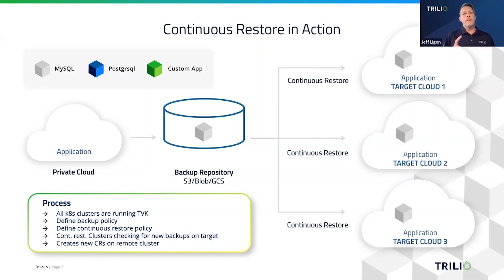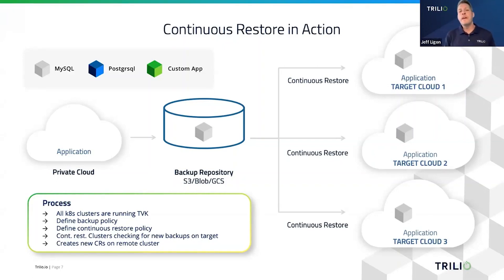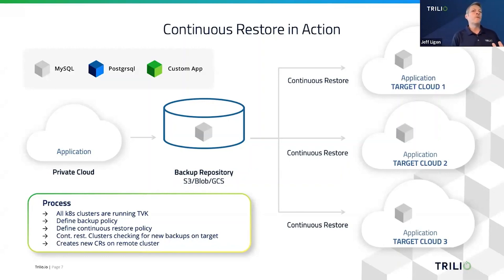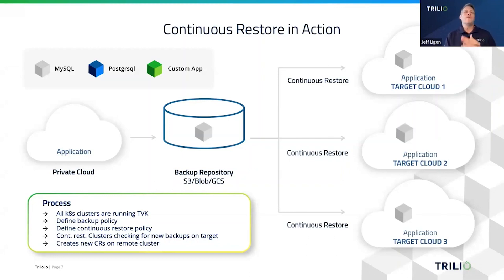No matter how you slice it, based on network latency and the amount of storage needed to fill those new volumes, it just takes any IT system time to do that. So what we're doing with continuous restore is addressing the persistent volume restore — the longest piece in restoring your data. Restoring metadata in Kubernetes happens very quickly, so what can we do to reduce the persistent volume time?